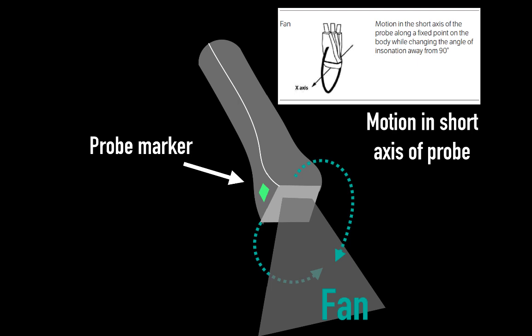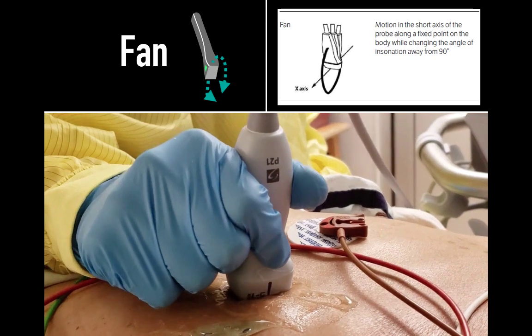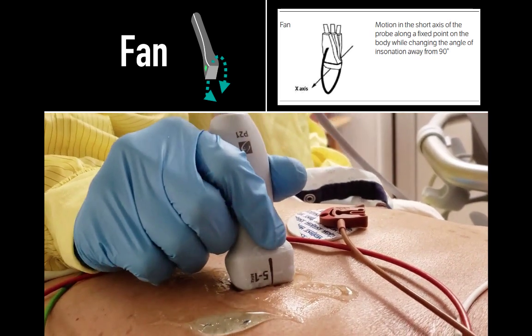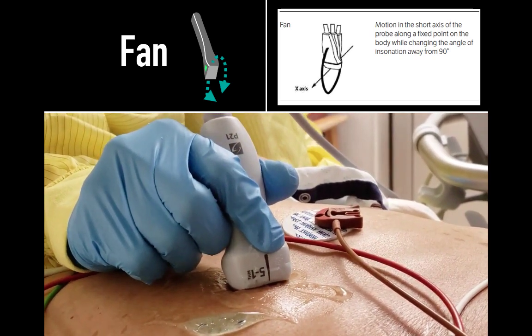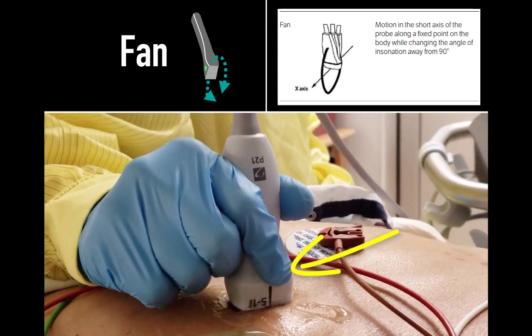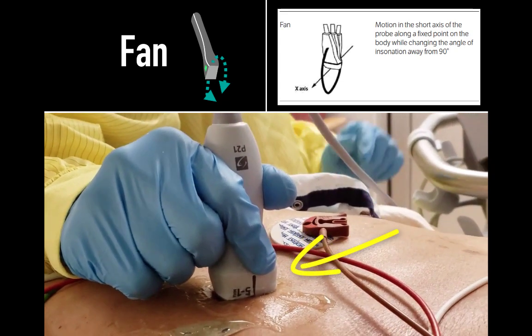This motion is in the short axis of the probe. But again, the probe remains fixed on the body. You can see the demonstration here. You cannot see the marker, but it will be facing towards patients' right side. Now the probe is moving in the short axis. The word fanning describes the motion well. It is indeed much like wafting with a fan.